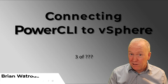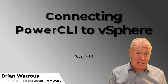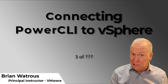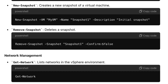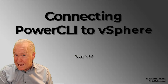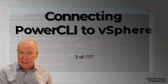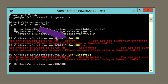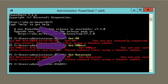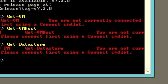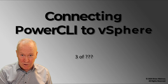After the previous video, you've got PowerCLI installed and you're probably really excited to use cmdlets like these. But if you install PowerCLI then immediately try to run cmdlets like Get-VM, Get-VMHost, or Get-Datastore, notice they're all failing. Can you figure out why?